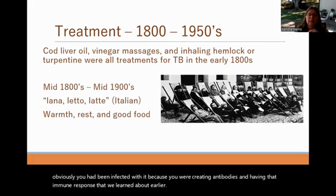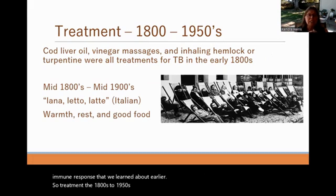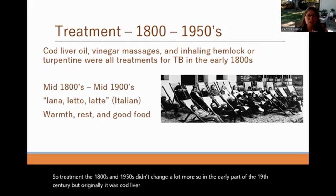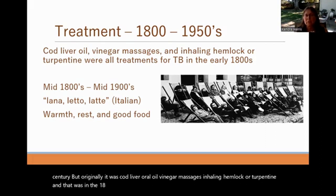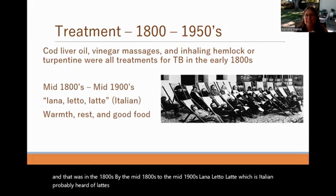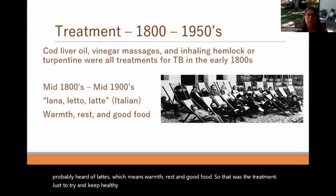Treatment from the 1800s to 1950s didn't change a lot. Originally it was cod liver oil, vinegar massages, inhaling hemlock or turpentine. By the mid-1800s to mid-1900s, the treatment was lana letto latte — Italian for warmth, rest, and good food — just trying to stay healthy and hope your body did the rest. Around this time, a major reversal of epidemic status began, likely due to three reasons: improved socioeconomic conditions, better nutrition, better work and home environments, and application of public health measures.